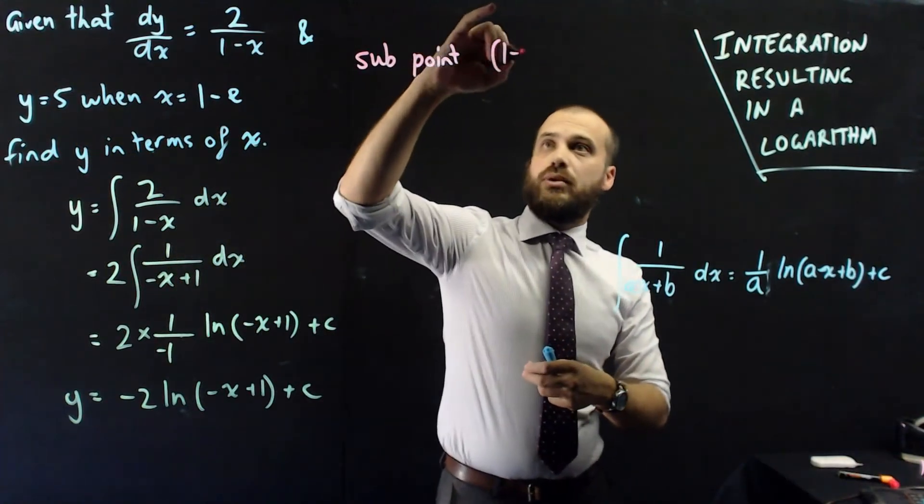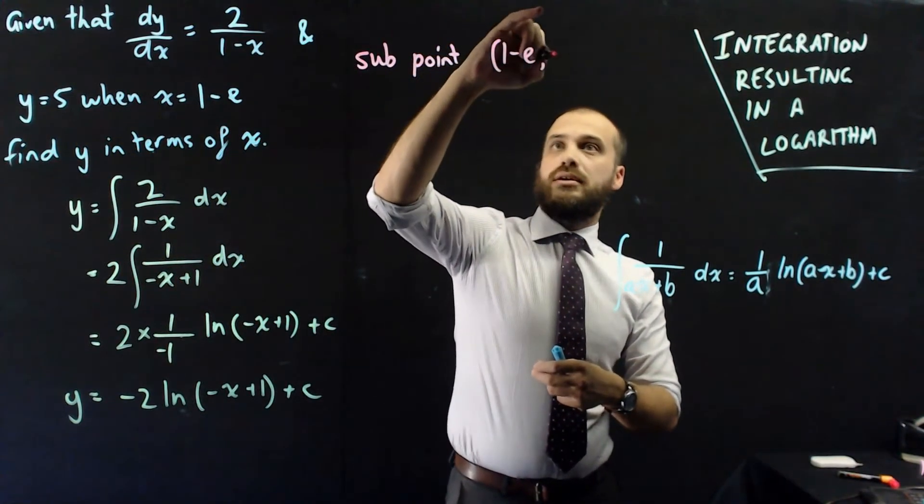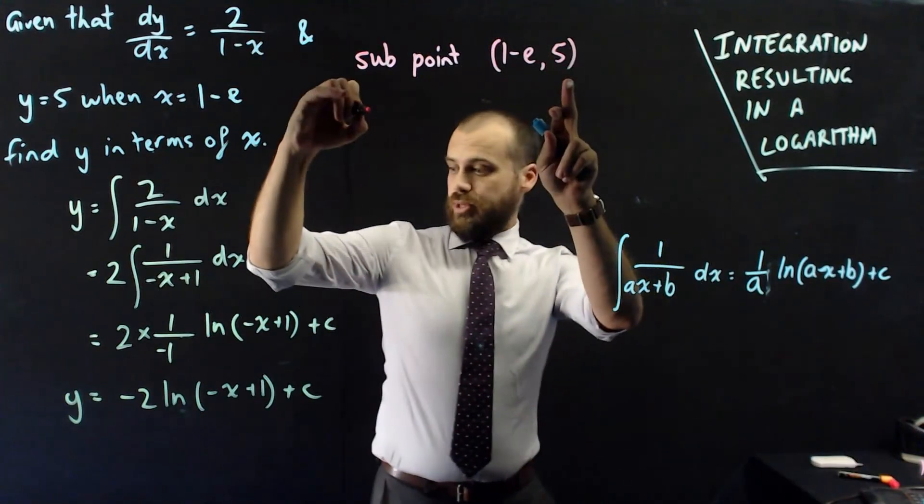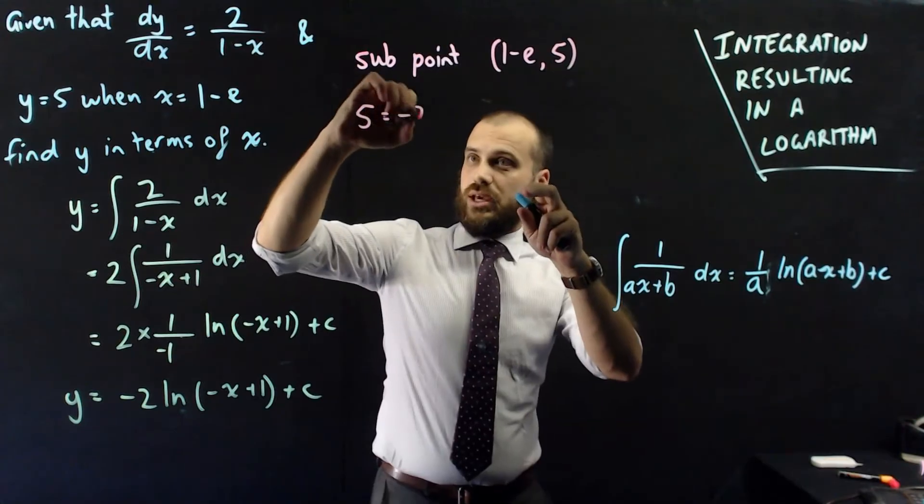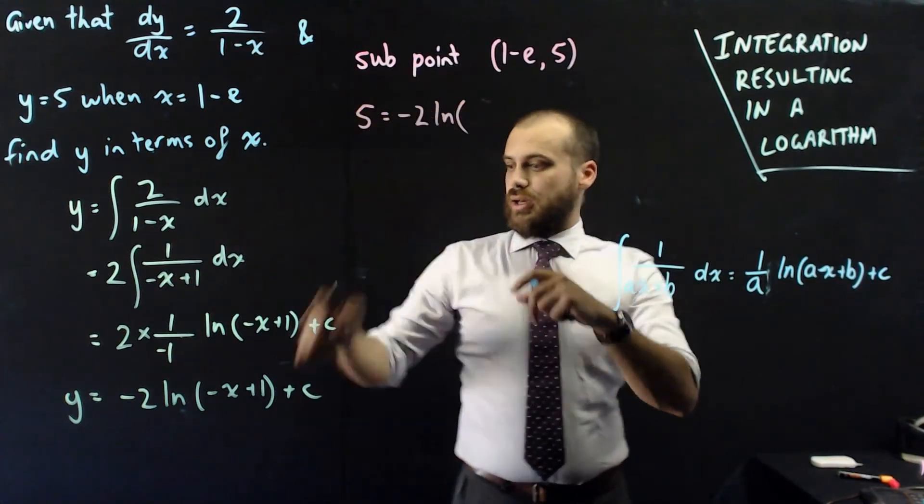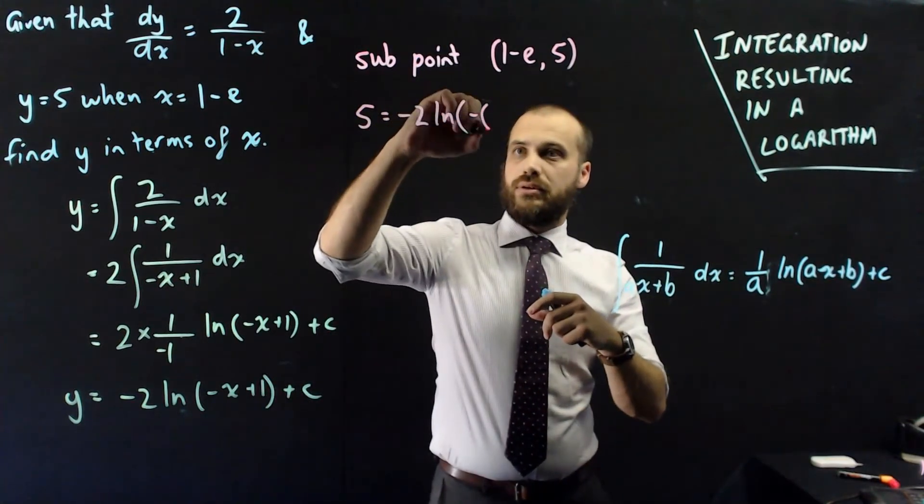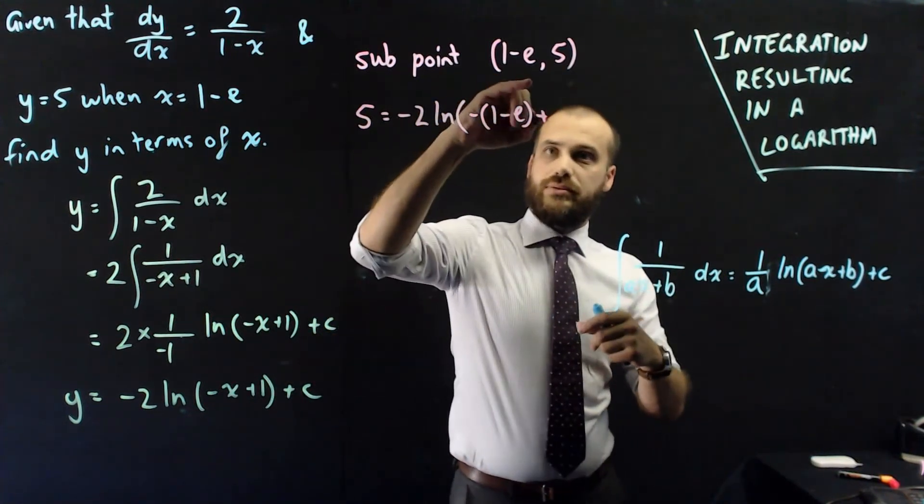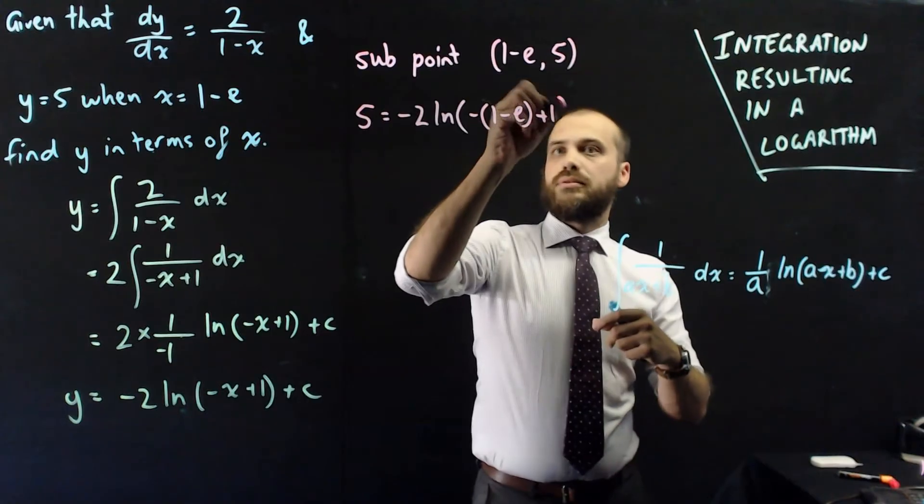Sub point 1 minus e, 5, into the equation. So, it'll be 5 equals negative 2, ln, negative 1 minus e, plus 1.